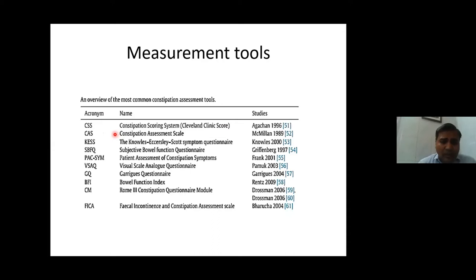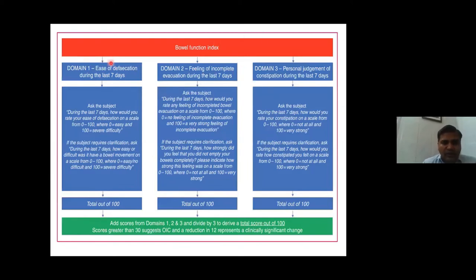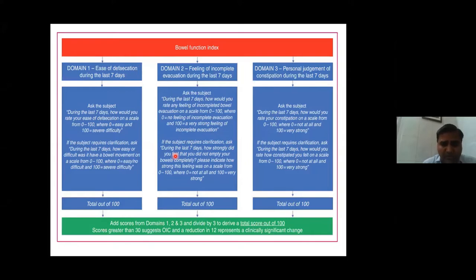Various scales are used to measure constipation, including the visual analog scale and the constipation scoring system. The Bowel Function Index (BFI) is the most common and validated tool. It has three domains: ease of defecation during the last week, feeling of incomplete evacuation, and personal judgment of constipation during the last week. Each domain is scored 0 to 100, with 0 being easy and 100 being severe difficulty. The three scores are averaged; a score above 30 is suggestive of opioid-induced constipation, and a reduction of 12 points represents a significant change.